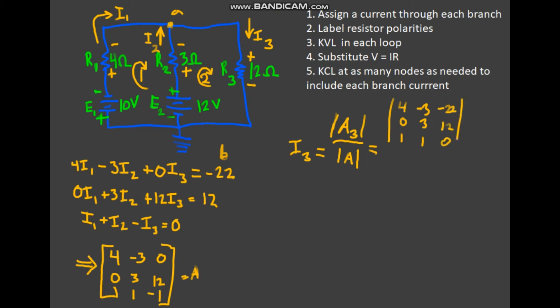And we're going to replace column three with negative twenty-two, twelve, and zero. And if you're not familiar with linear algebra notation, these straight lines they don't mean the absolute value. What they mean is that you're going to take the determinant of that matrix.